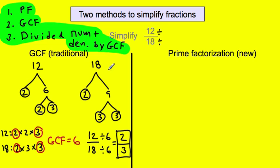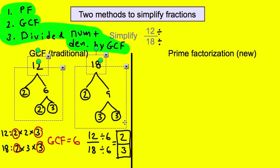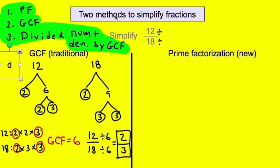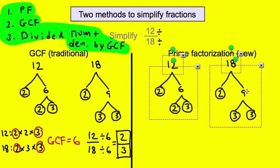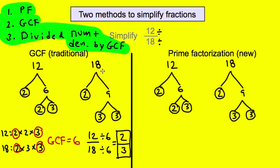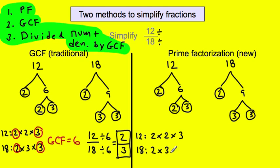The prime factorization method does the same thing to start off with, so we're going to copy the same thing down because we're going to start with prime factorization again. We're going to find the prime factorization of the numerator and the denominator and write it out just as before. So the prime factors of 12 are 2 times 2 times 3, and the prime factorization of 18 is 2 times 3 times 3.